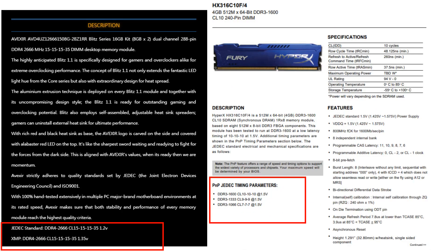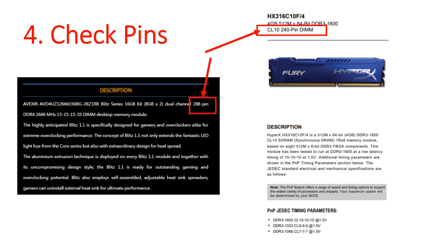DDR3 and DDR4 also use different voltages: 1.5V for DDR3 and 1.2V for DDR4. Number four: check the pins. DDR3 uses 240 pins and DDR4 uses 288 pins. Motherboards and CPUs are specific to these pin counts — you cannot put DDR4 in a DDR3 motherboard. If you have a DDR3 motherboard and want to use DDR4, you'd have to buy a new motherboard entirely.